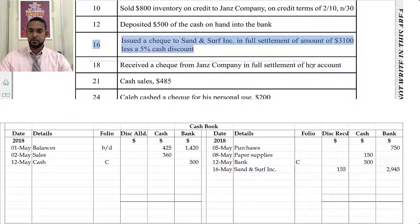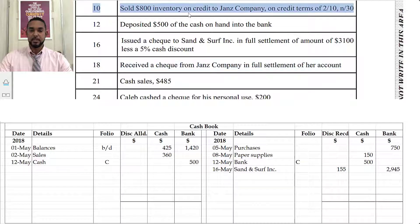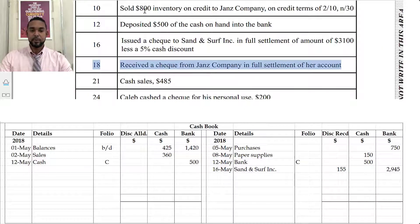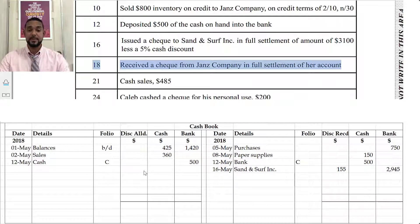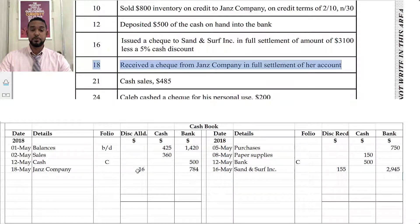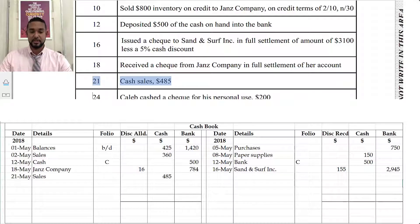On the 18th, we received a check from Jan's company in full settlement. Since they sold on credit on the 10th for $800, and Jan's paid on the 18th — which is within 10 days — they get the 2% cash discount. So 2% of $800 is $16, and 800 minus 16 is $784. We record $784 on the debit side under bank, with discount allowed of $16. We also have additional cash sales of $485, which go on the debit side under cash.